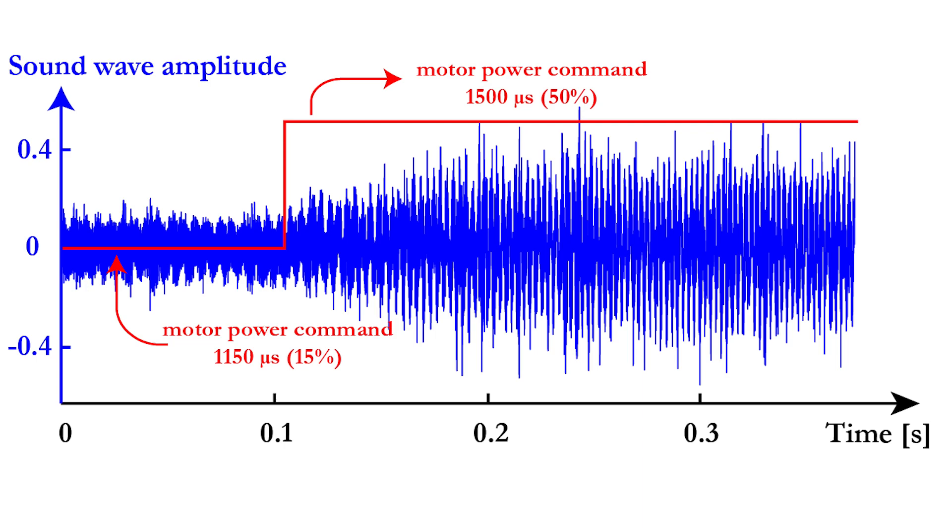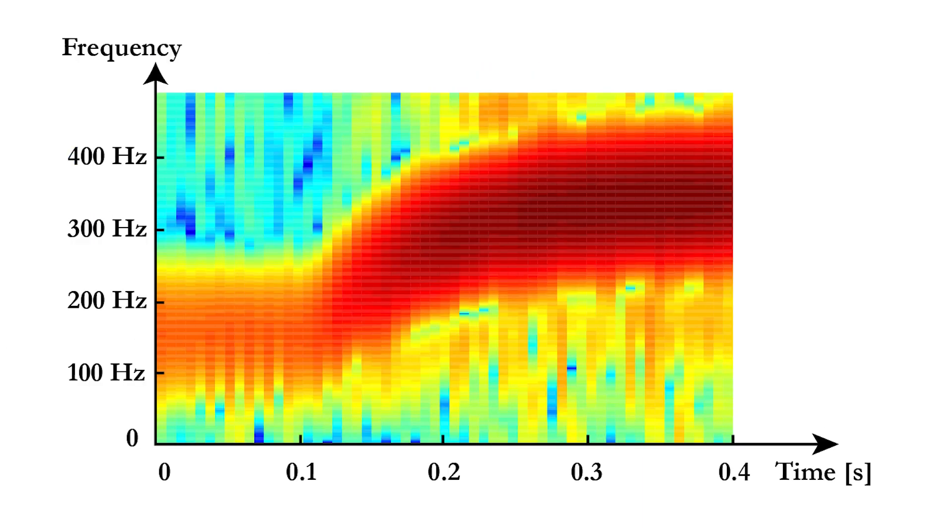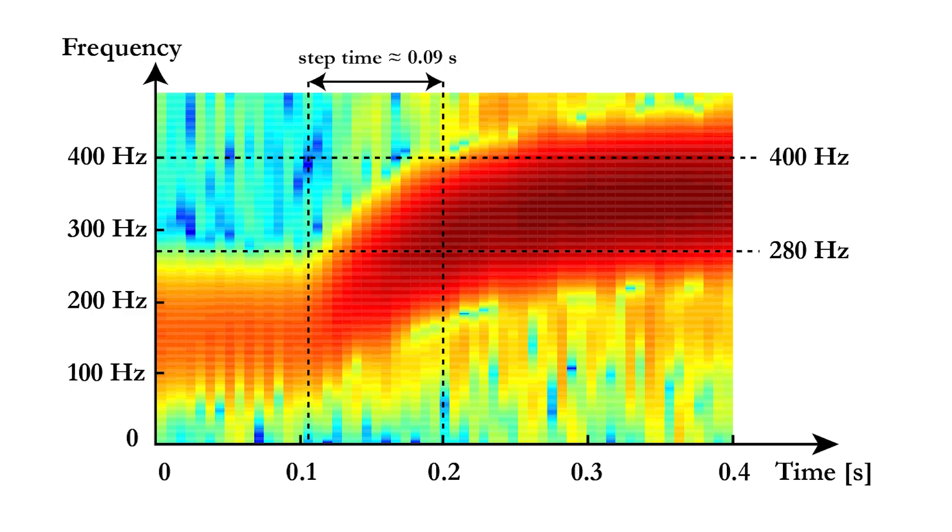While the fast Fourier transform reveals the motor frequency, all information with regard to time is lost. This can be solved with the so-called spectrogram, which allows you to follow the change in frequency over time. We know that the motor frequency started at 280 Hz, and ended at 400 Hz. Using the spectrogram, we see that it takes 90 ms for the motor to accelerate to 400 Hz.